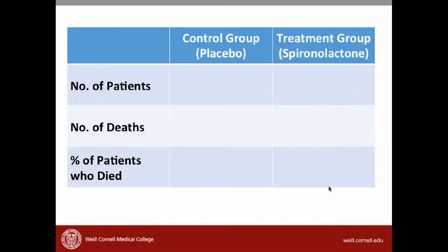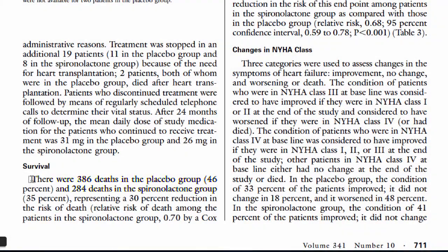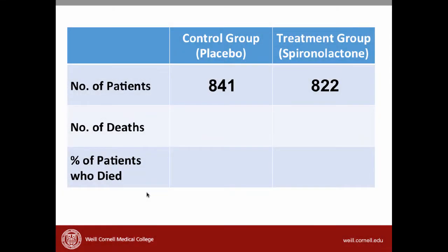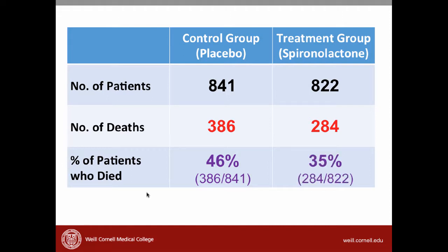Let's go back to our table and fill in these numbers: 841 patients in the placebo group and 822 patients in the treatment group. Continuing to scroll down in the results section, we can see there were 386 deaths in the placebo group and 284 deaths in the spironolactone group. Going back to our table, we put in 386 deaths in the placebo group and 284 deaths in the spironolactone group. We now have enough information to calculate the percentage of patients who died in each group.